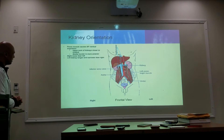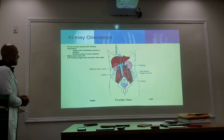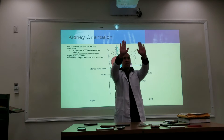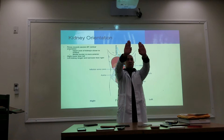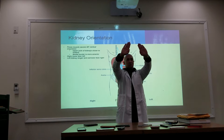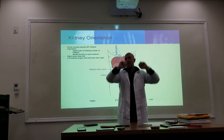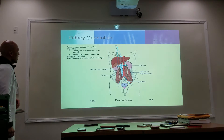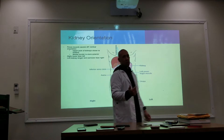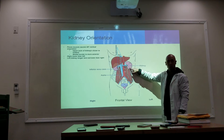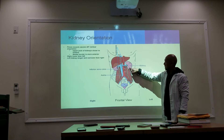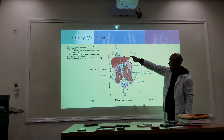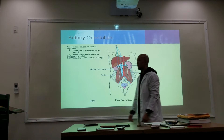Because of the psoas muscle, it causes the kidneys to have a 20-degree vertical angulation. The kidneys actually have a rotation because of the psoas muscle. The kidney is broken up into two poles: an upper pole and a lower pole. The upper pole of the kidneys are going to be closer to the midline because of that angulation.